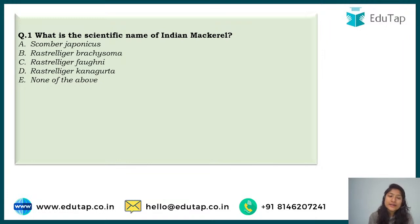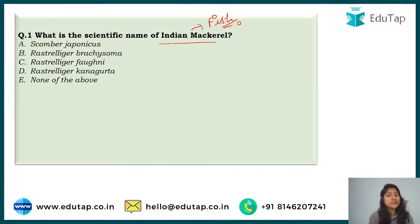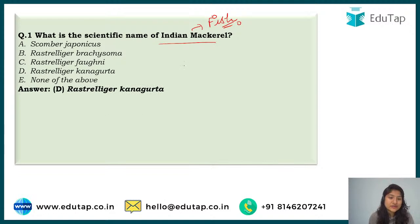Question number one asks: what is the scientific name of Indian Mackerel? This Indian Mackerel is a type of fish and you have to tell its scientific name. If you are preparing for AFO — and in fact for NABARD also — they have started asking in-depth questions, which is why this chapter is very important. The correct answer is option D, that is Rastrelliger kanagurta.